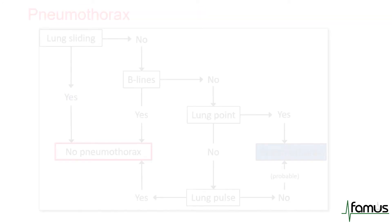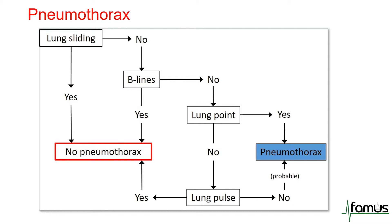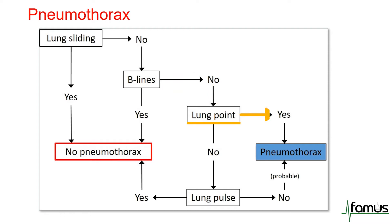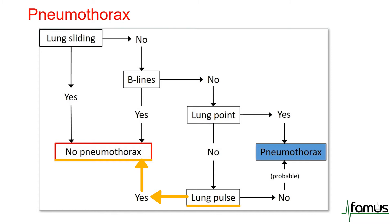This helps you go down a decision tree to make the diagnosis. Starting top left: is there lung sliding? If yes, you've ruled out pneumothorax. If there is no lung sliding, the next question is: are there B lines? If there are, again you've ruled out pneumothorax. If you see no B lines, the next point to look for is a lung point — and if you positively identify a lung point, you have positively made the diagnosis of pneumothorax. If you don't see a lung point, the next thing to look for is a lung pulse. If you detect a lung pulse, the pleura must be opposed and therefore you've ruled out pneumothorax. Whereas an absence of lung pulse with all the other signs suggests a diagnosis of pneumothorax, although it's not definitive.